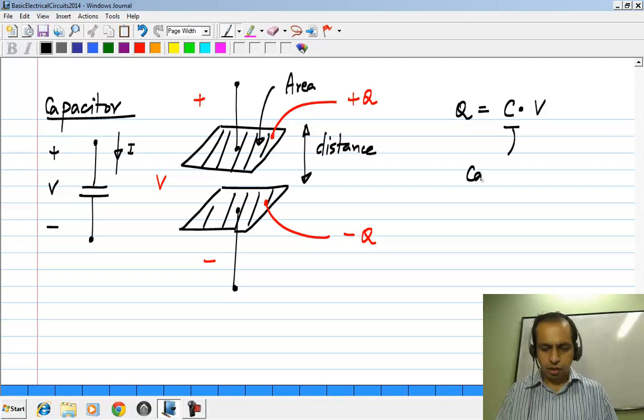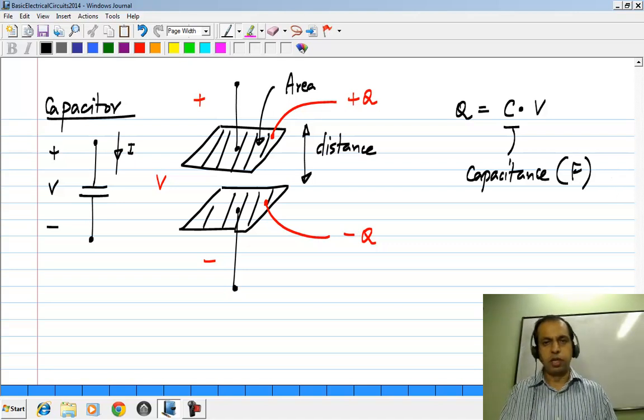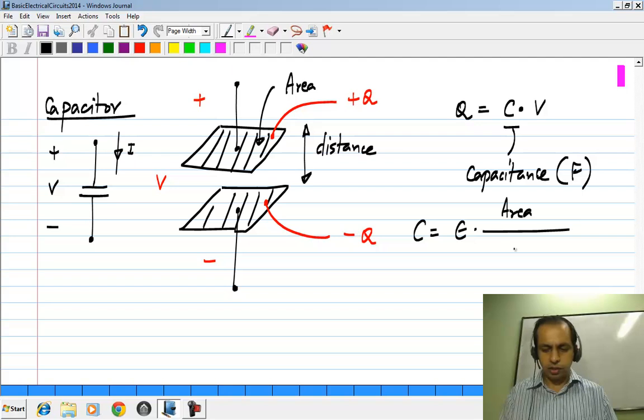C is the capacitance measured in farads. So what it means is, if you have a one farad capacitance, you apply one volt across it, there will be one coulomb of charge on each of the plates. There will be plus one coulomb on the plate which is connected to the positive side of the voltage and minus one coulomb on the other plate. And this C itself is given by some permittivity times area divided by the distance.